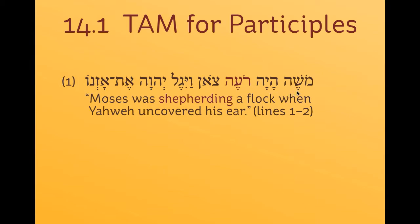This is why the writer didn't use a katal form for shepherding or a wayyiqtol form. If it were katal, you could say 'Moshe ra'ah son' — Moses shepherded a flock and Yahweh revealed something to him. But that would make it sound like Moses did his shepherding and later Yahweh revealed something to him. The point is that Moses was doing his shepherding one day when Yahweh revealed something to him.